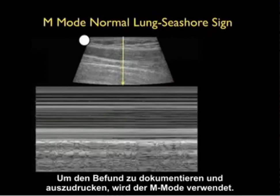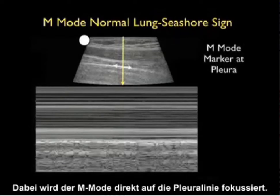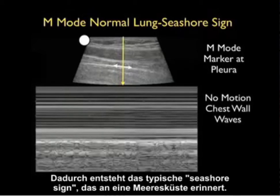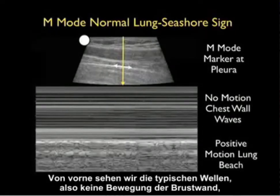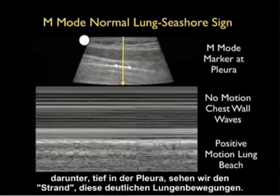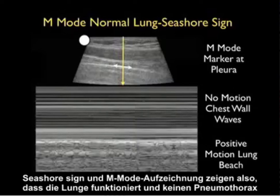A way to document that the lung is up for the chart is to use M-mode, locating the M-mode cursor right at the pleura. What we see is the classic seashore sign, or waves on the beach. Looking anteriorly we'll see the classic waves, or no motion of the chest wall. And below that, deep to the pleura, we'll see the positive motion of the lung making up the beach. So waves on the beach, or the seashore sign, is M-mode documentation that the lung is up and that there's no pneumothorax.